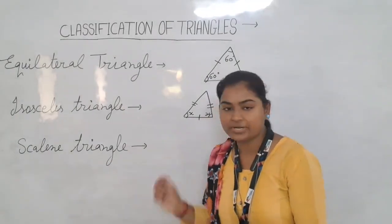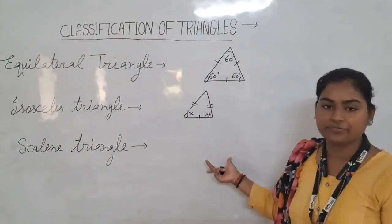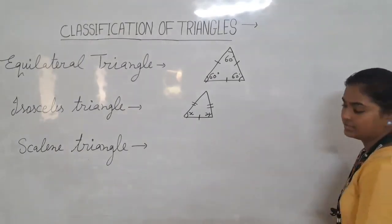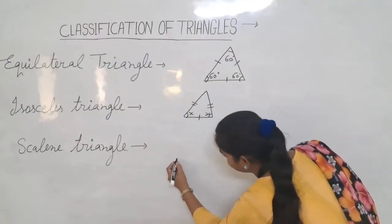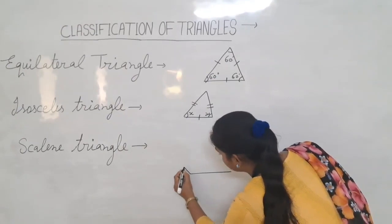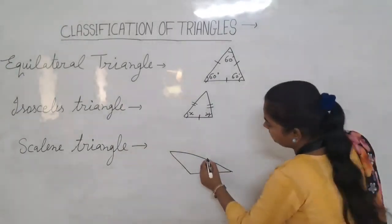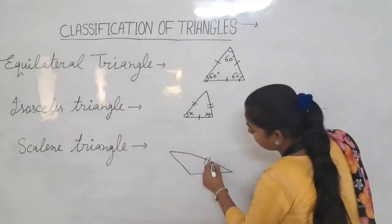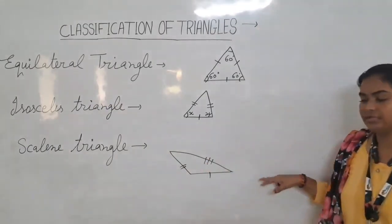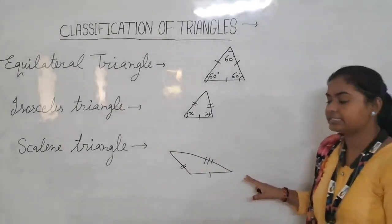Third, we take a scalene triangle. In a scalene triangle, the length of all three sides are different. It is a scalene triangle.